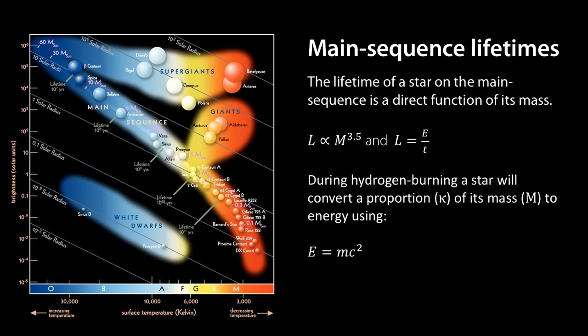But can we put an equation on that? Well you know that the luminosity mass relationship is L is proportional to M to 3.5 and also we can define luminosity as the energy emitted per unit of time.